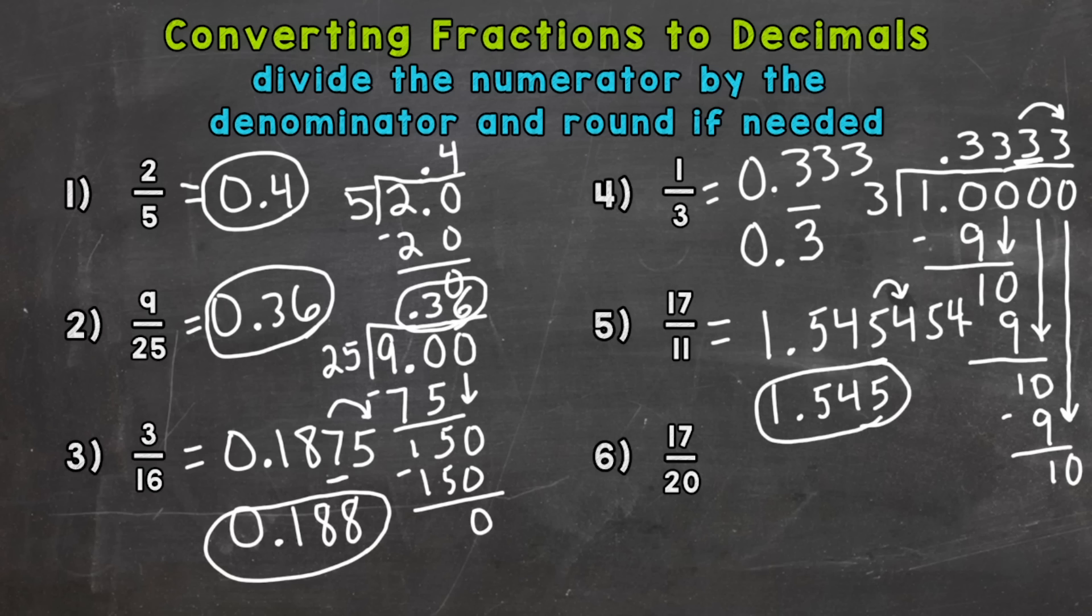Or, we can use the bar method. Or we can use the bar method. So 1 and 54 repeats. So we can put our bar above the 54 to show that that will continually repeat.